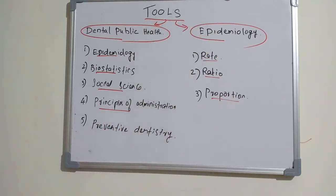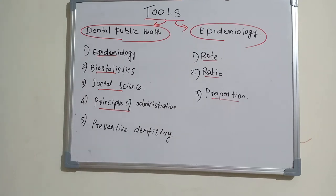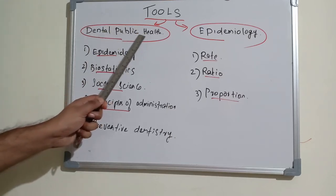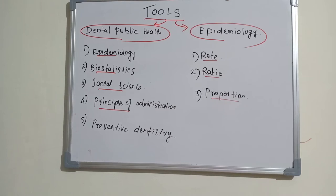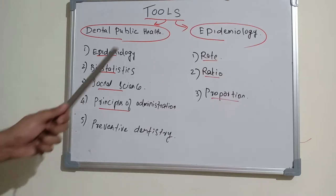Dental public health corresponds with clinical dentistry. Clinical dentistry is concerned with treating one patient, whereas public health dentistry is concerned with preventing oral diseases in a very large group of people. When preventing and promoting oral health of a large group, we need specific tools.